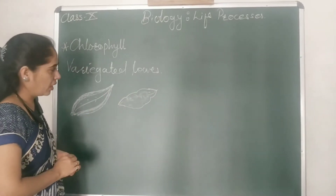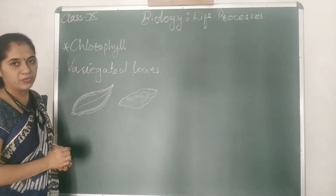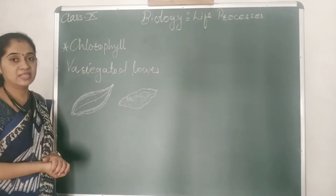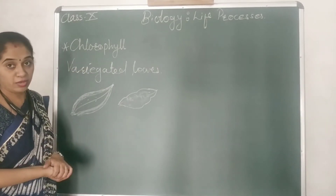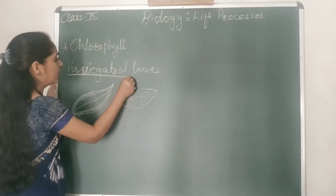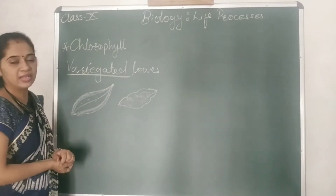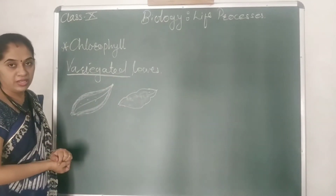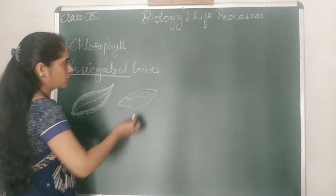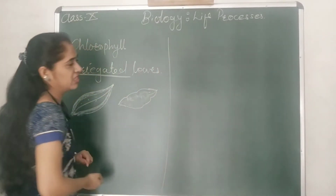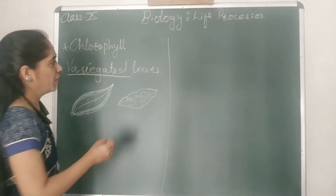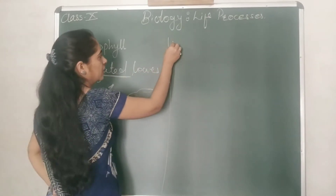So for this experiment, to check whether the chlorophyll pigments are really necessary for the process of photosynthesis, we have to select these variegated leaves.